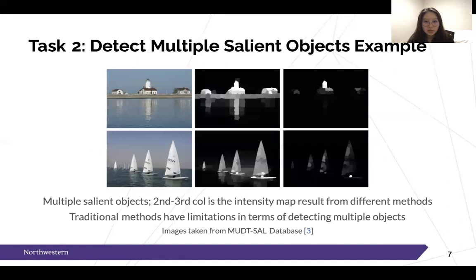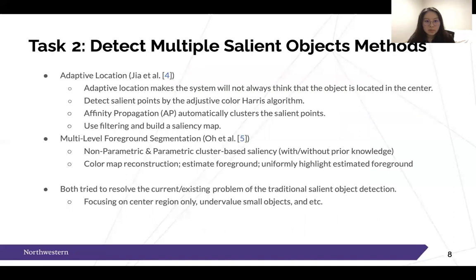Another challenge is detecting multiple salient objects. Multiple objects are difficult to detect because traditional approaches are designed to detect simple and basic ones. Guil et al. proposed adaptive location, which makes the system not always assume the object is located in the center. Their method detects salient points using the Adjustive Color Harris algorithm, then affinity propagation automatically clusters the salient points, which are filtered to produce a saliency map.